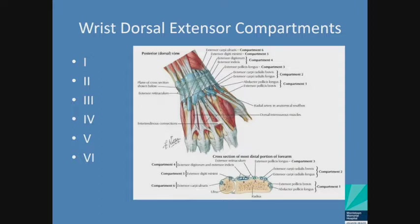Your EDC tendons — compartment four — those tendons that extend your digits are your common extensor tendons, commonly inflamed in inflammatory arthropathies or lacerated in trauma. Compartment five: extensor digiti minimi, commonly involved in atraumatic ruptures in rheumatoid arthritis. Compartment six: your ECU tendon, commonly involved in snapping ECU or instability of the ECU — we see that in racquet sport and baseball players.